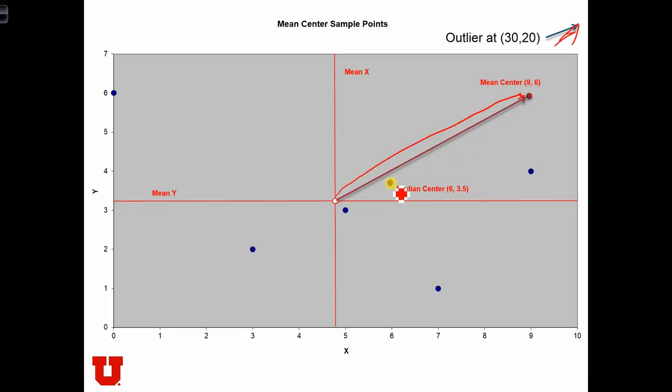And here is that median. We see that the median center, it's still shifted somewhat because we've got such a small sample size. So any additional point is likely to shift the location of any descriptive statistic. But we see that the shift occurring is much smaller in this case than it was when we are calculating the mean center.